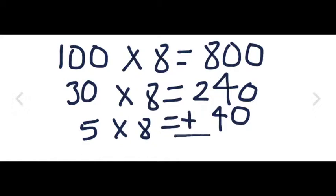The final step is to add the products of each multiplication together. So, 800 plus 240 plus 40 is 1080.